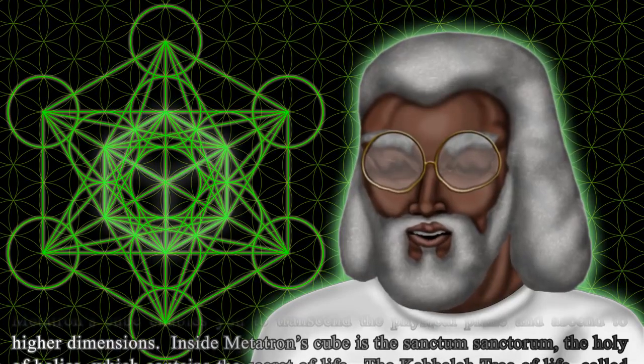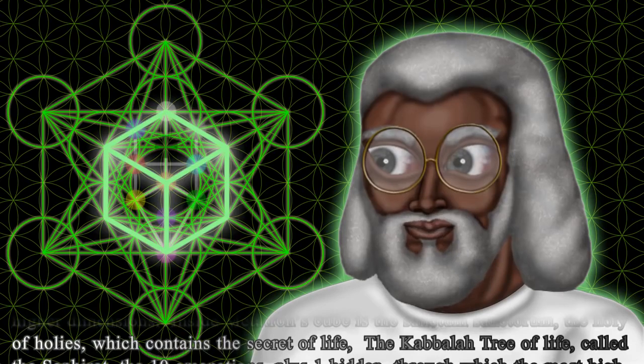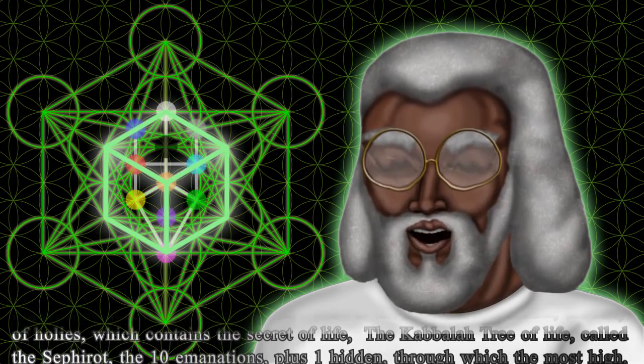Inside Metatron's cube is the sanctum sanctorum, the holy of holies, which contains the secret of life, the cabalitry of life, called the sephirot.